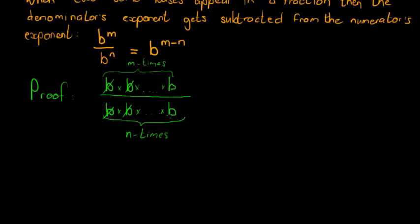Well, let's imagine that M is greater than N, in other words, there's more B's in the numerator than there is in the denominator. Then in the end, what will we have?